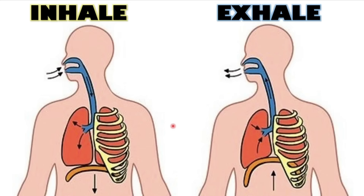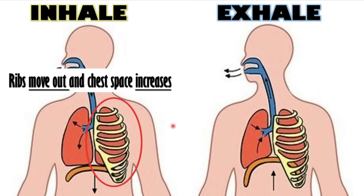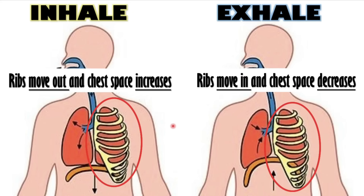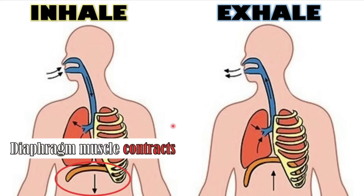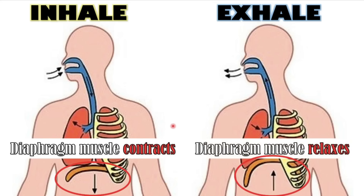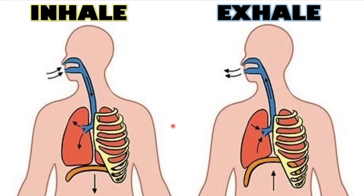Next, when we inhale, the ribs move out and the chest space increases, or the chest space becomes larger. Next, the diaphragm is a muscle in the respiratory system that helps us breathe. When we inhale, the diaphragm contracts and moves down. When we exhale, the diaphragm relaxes and moves up. So that is what happens when we breathe.